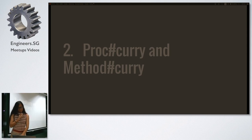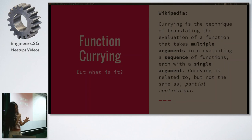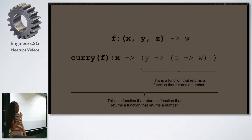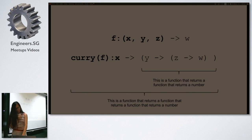What is function currying? Currying is the technique of translating the evaluation of a function that takes multiple arguments into evaluating a sequence of functions each with a single argument. Currying is related to but not the same as partial application. So: I have function f(x, y, z) that returns w. If I curry this function, I get a function that returns a function — the curried function takes one argument, returns another function, and so on until the last function finally evaluates.